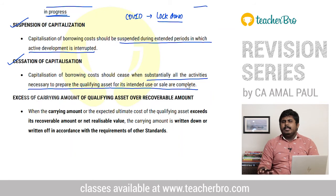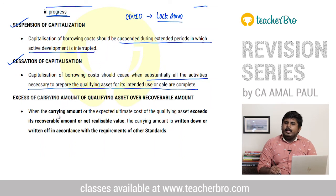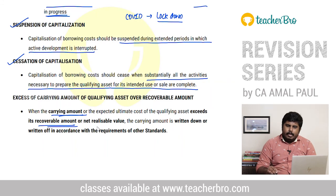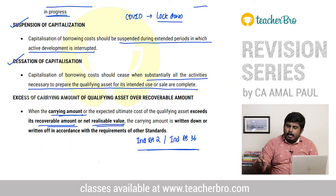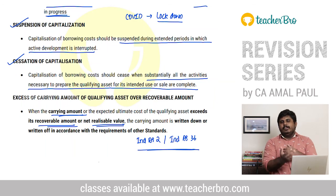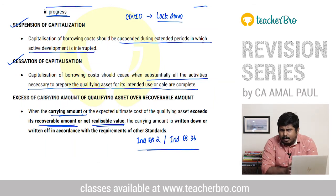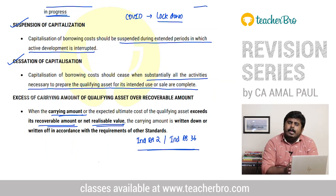Substantially all activities must be completed for cessation. Also, under the standard, the carrying amount of the qualifying asset should not exceed its net realizable value — similar to Ind AS 2 and Ind AS 36 write-down provisions. So in summary, Ind AS 23 borrowing cost capitalization is the crux of this concept. Thank you.